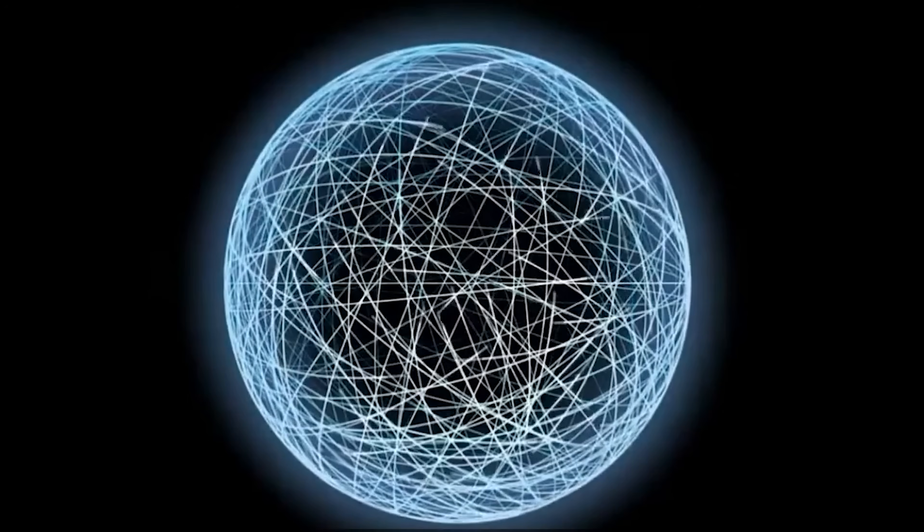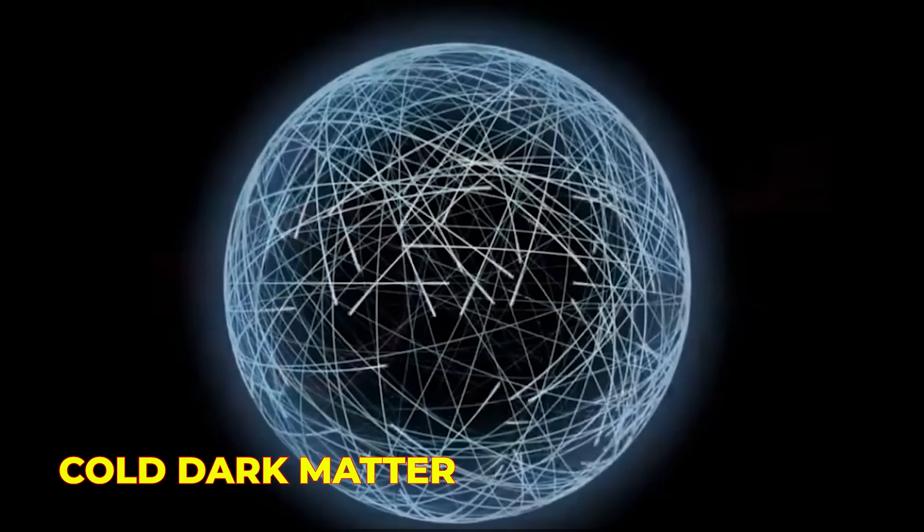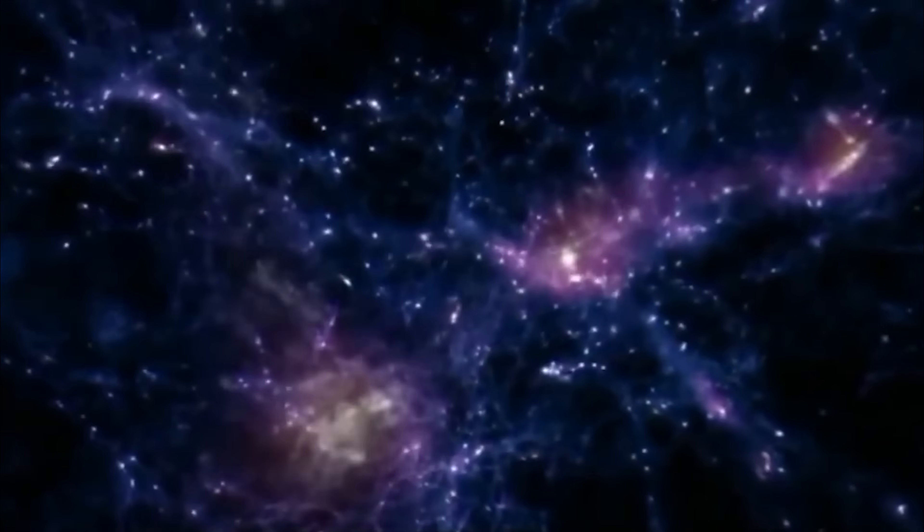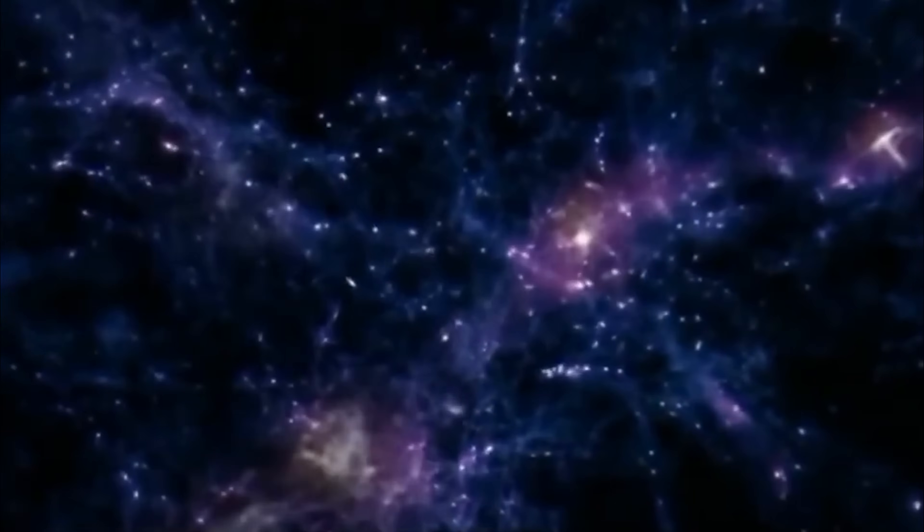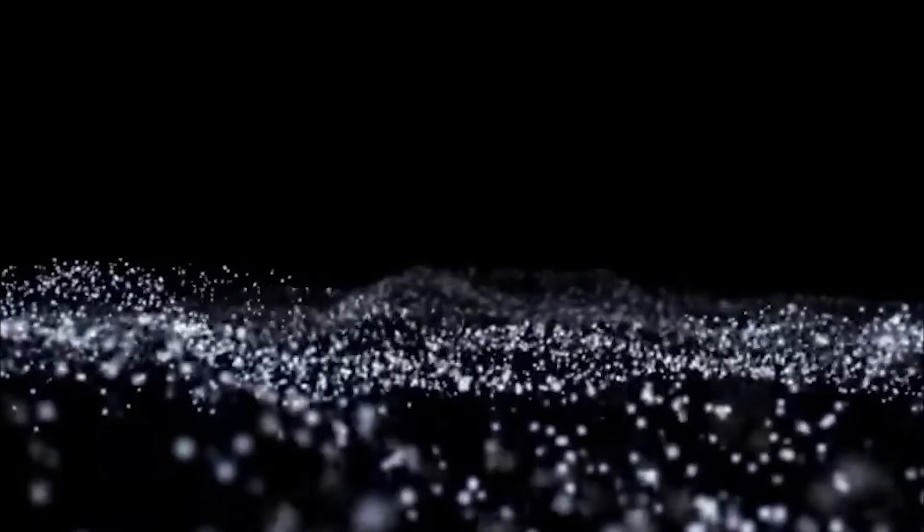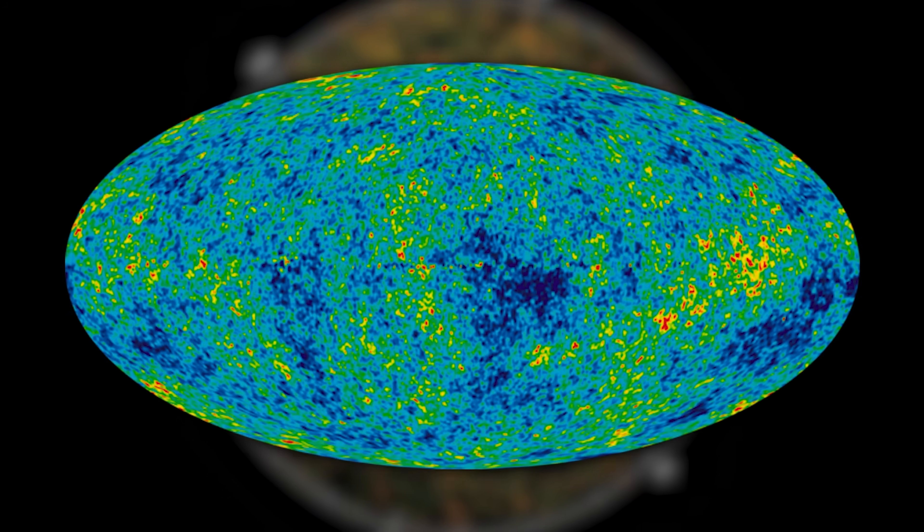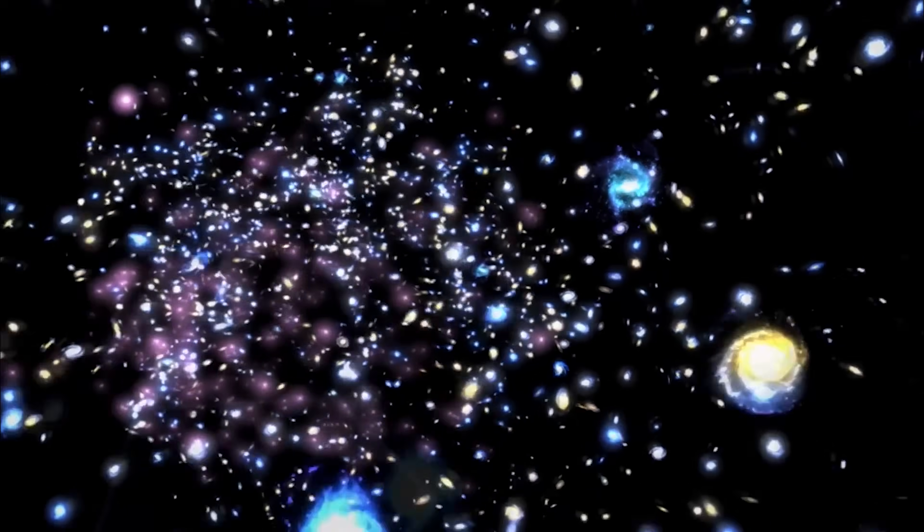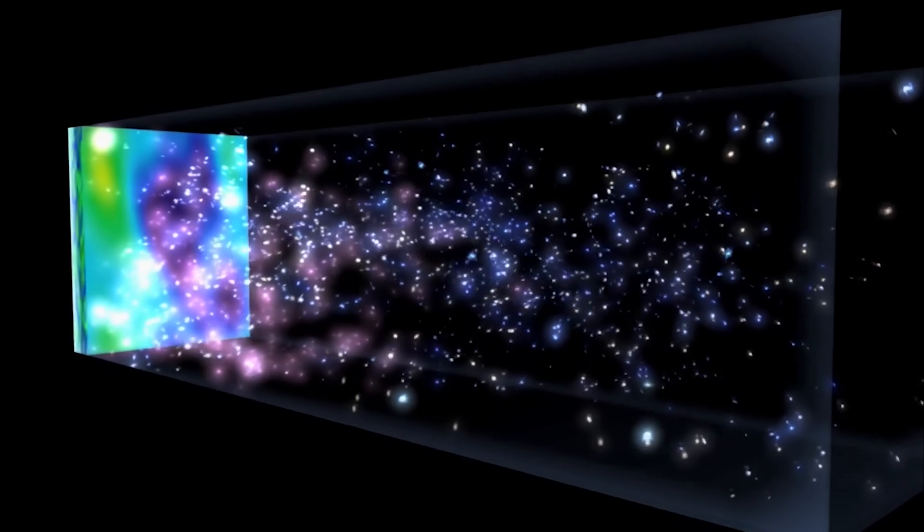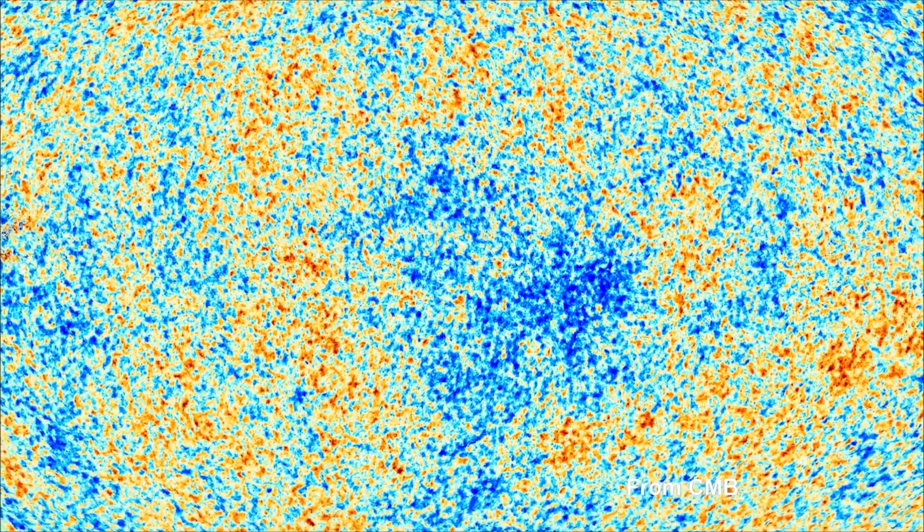For a long time, the leading idea was something called cold dark matter. In this model, dark matter would be made up of one kind of slow-moving particle that, like neutrinos, only rarely interacts with anything else, and in this case only through gravity, not even via the weak force as neutrinos do. On cosmic scales, CDM is a brilliant fit. It accounts for much of what we see in the structure of the universe and explains many long-standing puzzles.